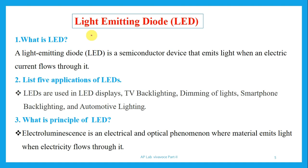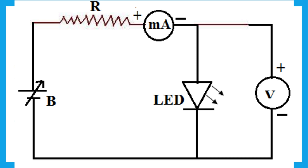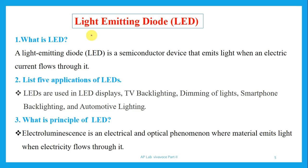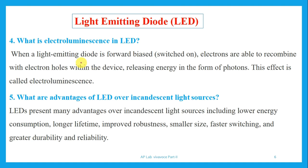LEDs have many applications: LED displays used in TV monitors, dimming of lights, smartphone backlight, automotive lights, and in remote controls as indicators. What is the principle of LED? Electroluminescence — it is an electrical and optical phenomenon where a material emits light when electricity flows through it. In physics, questions will be generated from your answers, so whenever you use terms, you should be familiar with them. What is electroluminescence in LED?